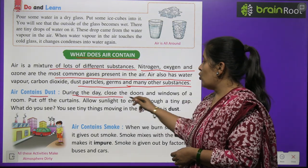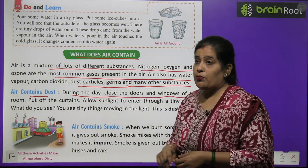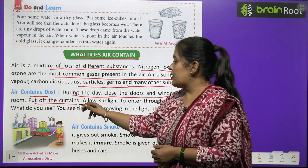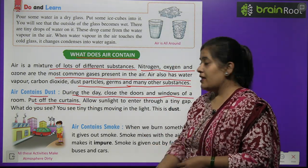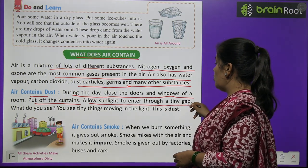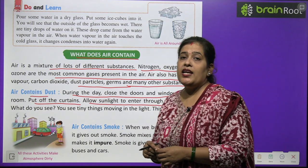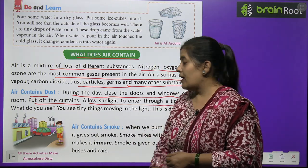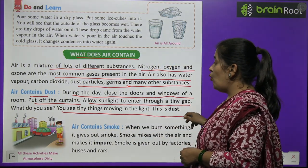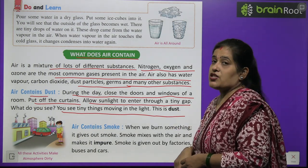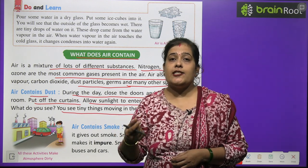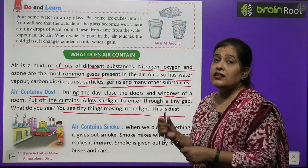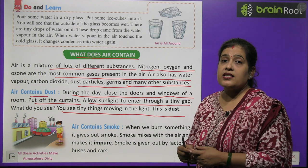Air contains dust. During the day, close the doors and windows of a room. Put the curtain. Allow sunlight to enter through a tiny gap. What do you see? You see tiny things moving in the light — this is dust. Jab aap dekhenge ki jo chote se chet se suraj ki roshni aa rahi hai, usme chhote chhote dust particles hain.